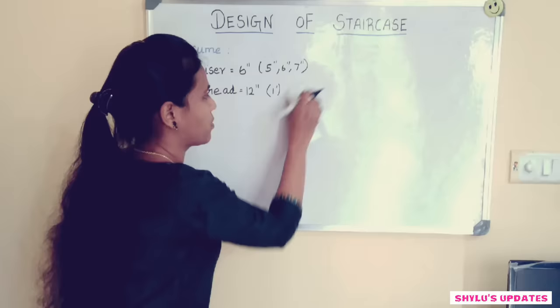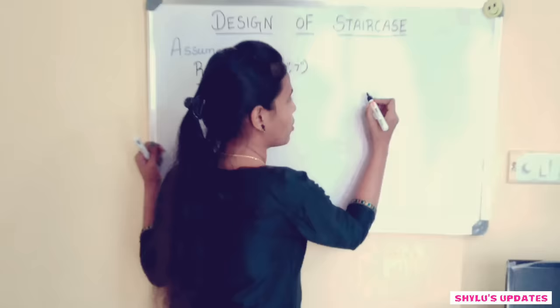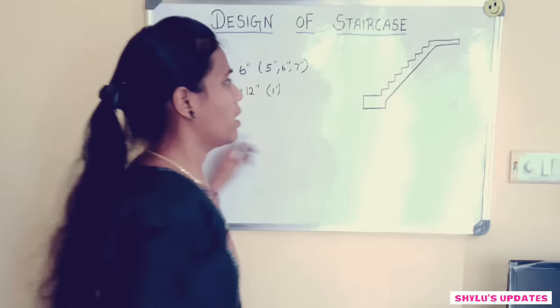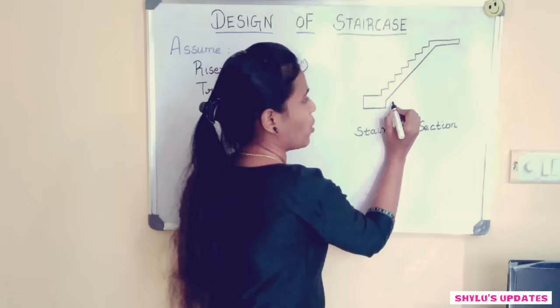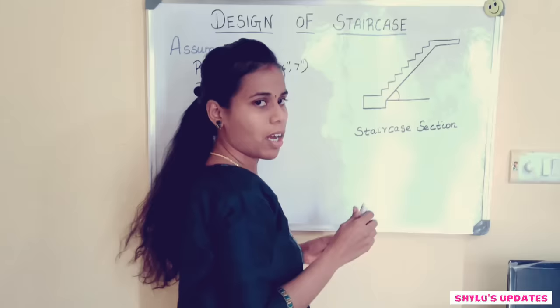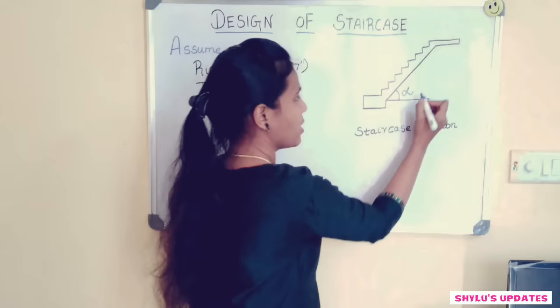Now I am going to draw a small staircase section for better understanding. This is a staircase section. As I mentioned already, this is the pitch or slope of the staircase, in this case called alpha, or you can also call it theta.